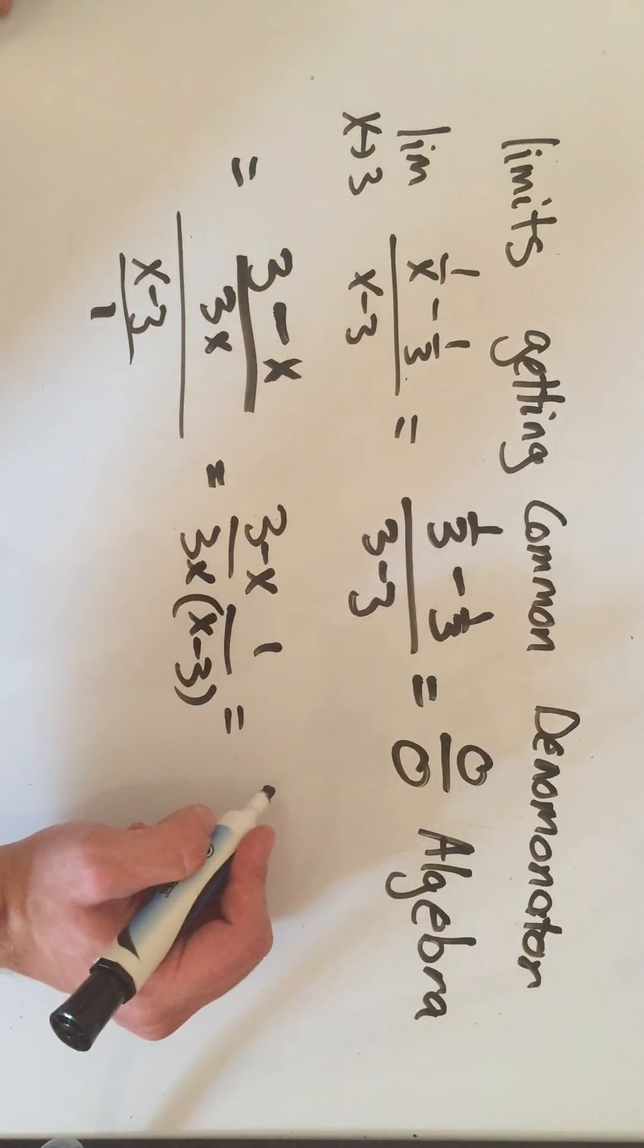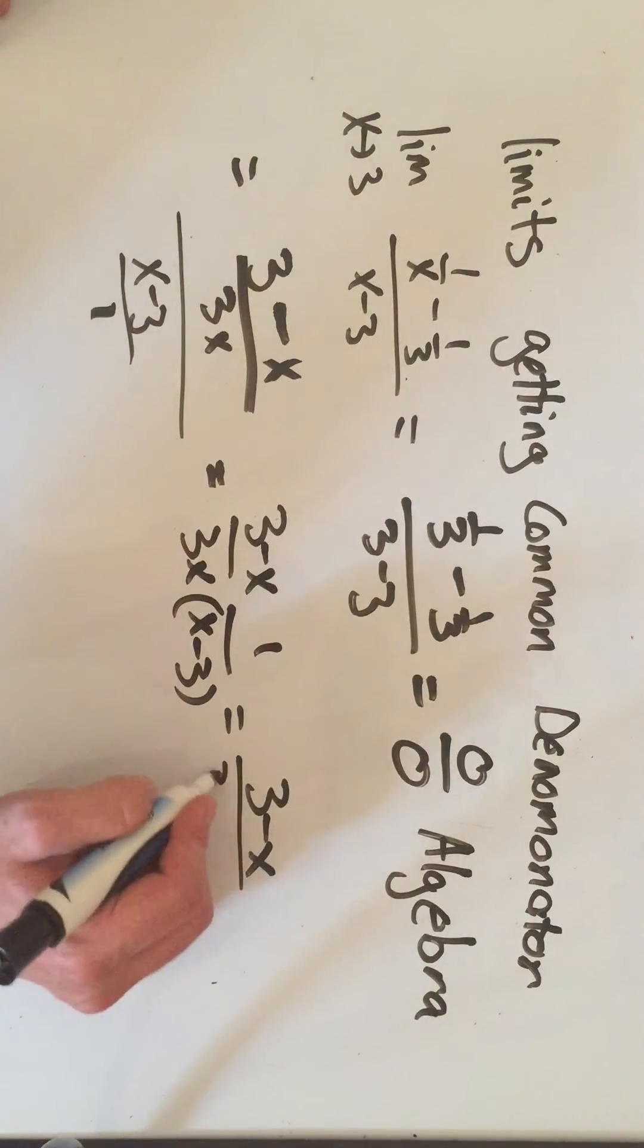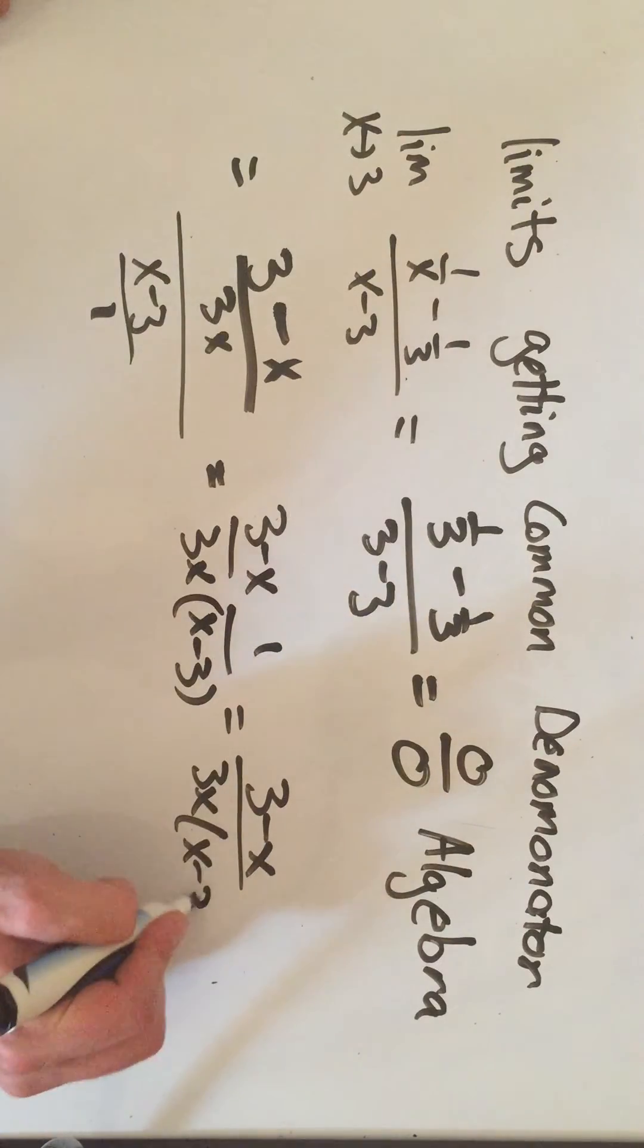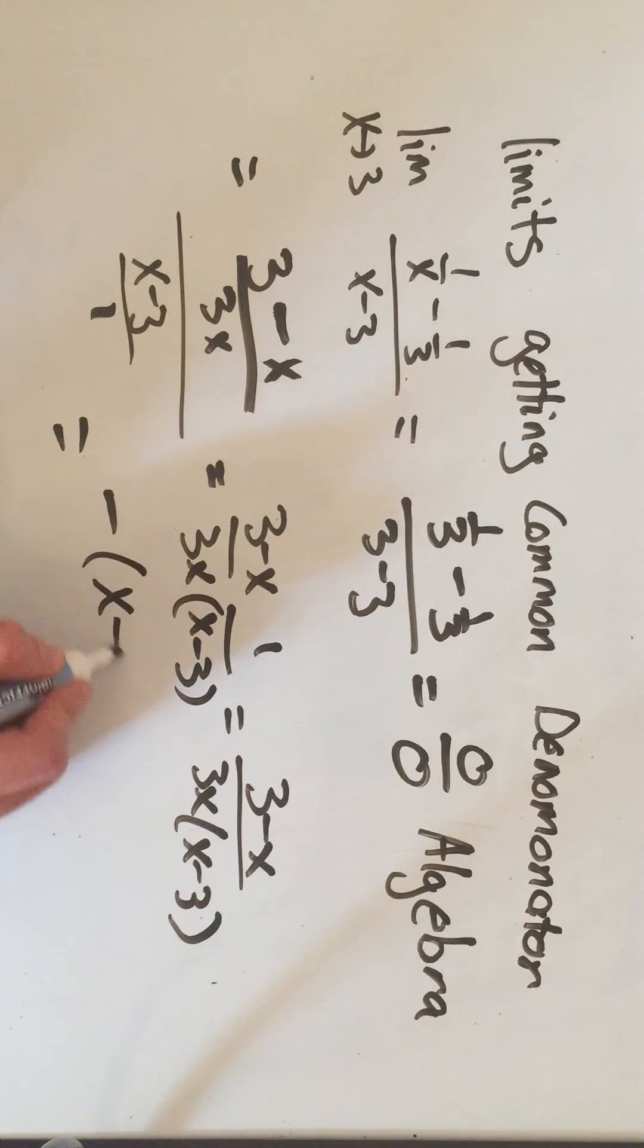And this is going to be 3 minus x times 1 over 3x, x minus 3. And if you notice, the numerator and this x minus 3 are very similar. They're just off by a negative sign. I'm going to factor out a negative on top and make that x minus 3.